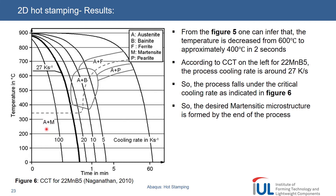This is roughly the temperature where martensite start formation begins. According to this, the process has been developed. What I'm doing in the simulation is based upon this CCT curve. This is one thing we always need to concentrate on when doing hot stamping - our cooling rate should be less than 27 kelvin per second.